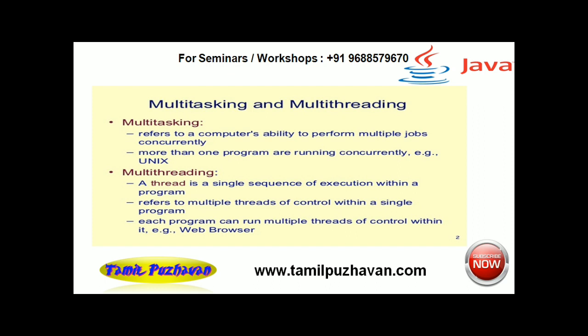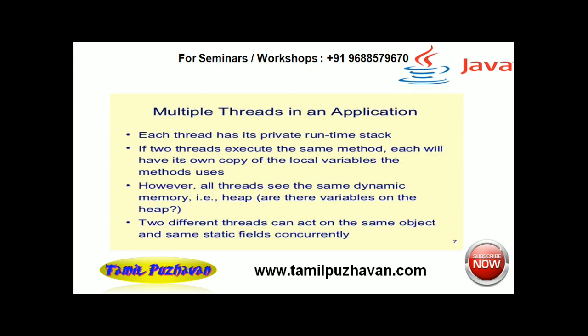The same method with powerful performance — this is the same method. For example, if you have two threads, one method will execute the same method. Each will have its own copy of the local variables the method uses. So if you have two threads, the same method will be used. You can add two threads, two operations — I have 10, 10, 10. The value of the result is 30; the value of the result is 90. So it will be 100. You can add two operations.